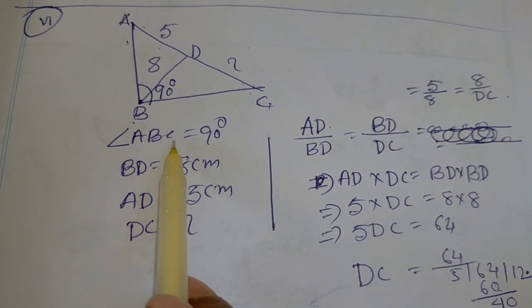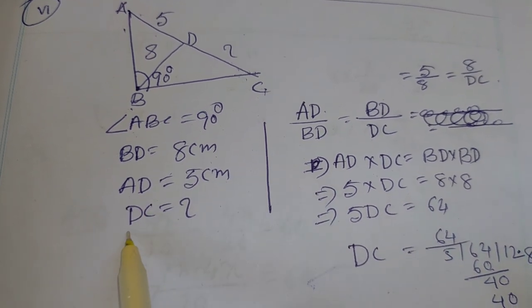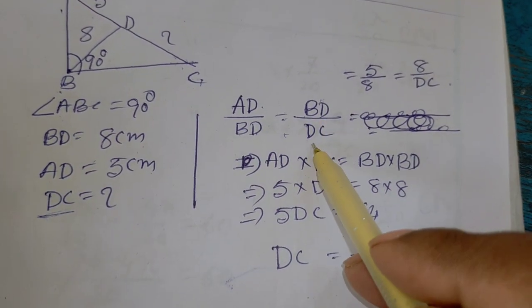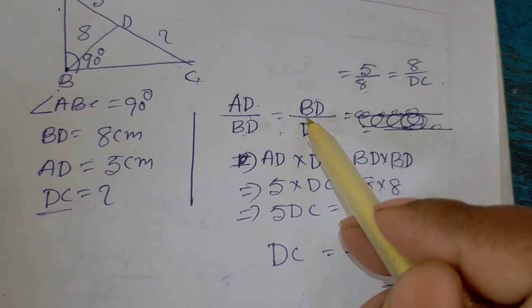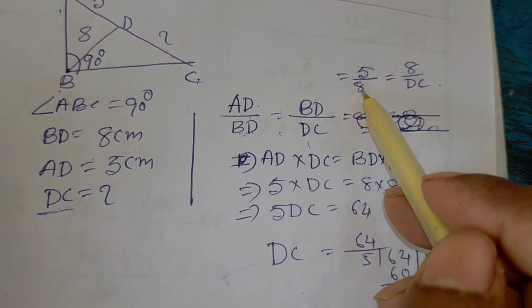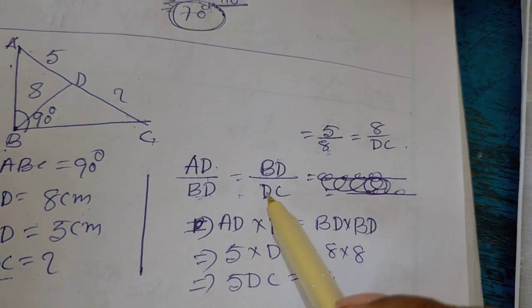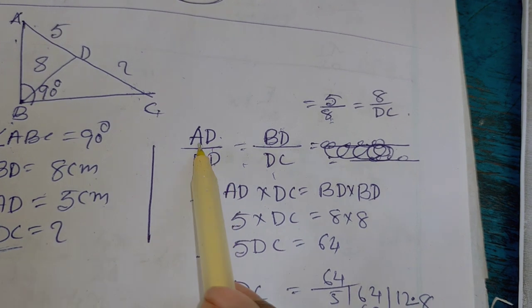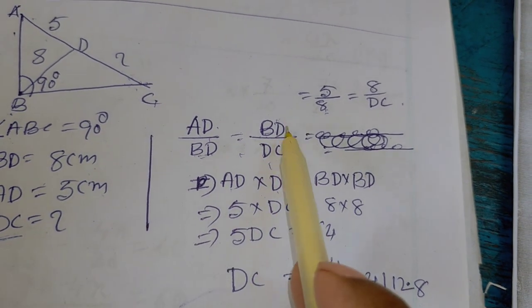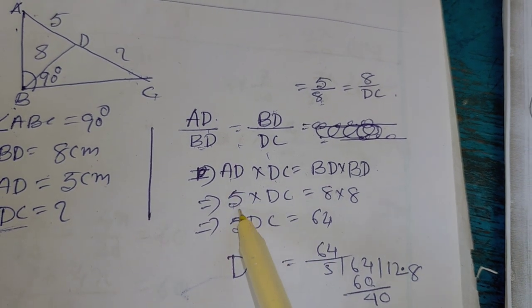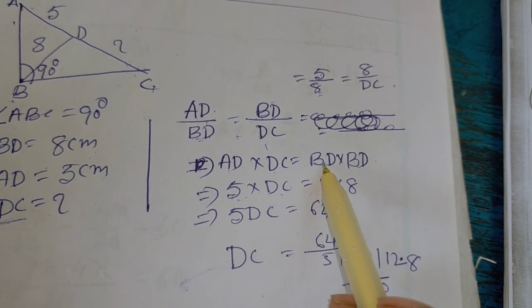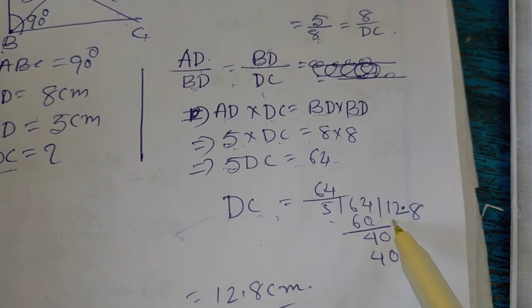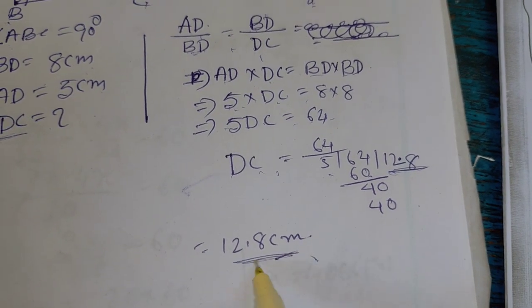So the code ABC 90 degree, BD 108 cm 85 cm, ABDC. So AD by BD, BD by DC. AD is 5, BD is 8. AD by BD, 5 by 8. DC is 5, BD is 8. DC into AD, DC into BD. 5, 8. The answer is 12.8 cm.